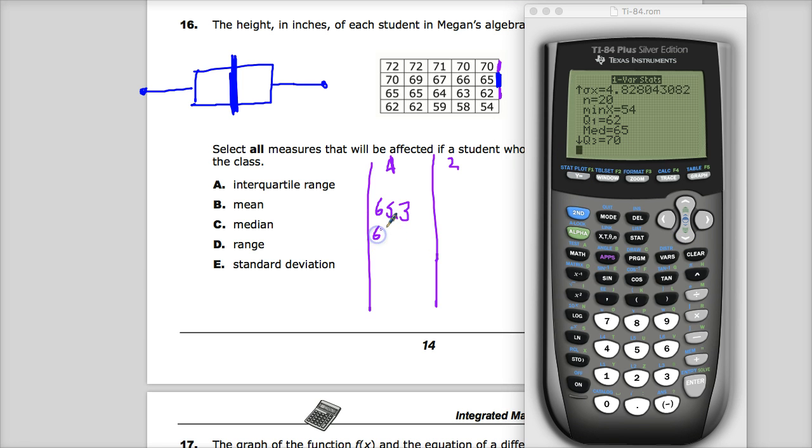The interquartile range would be the difference between Q3 and Q1. So I just need to do a little subtraction, and so that's 8. The range value, I just need to do the distance between the largest point and the smallest point. The minimum value is 54, and the maximum value is 72.